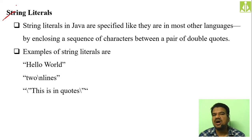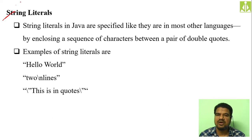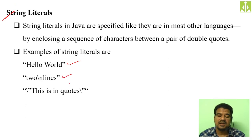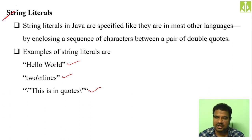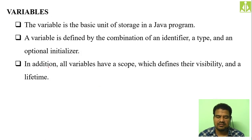In Java, string is an object. String literals are specified by enclosing a sequence of characters between a pair of double quotes — for example "Hello World". The representation is the same as C — double quotations — but in C a string is a sequence of characters terminated with a delimiter, whereas in Java a string is an object, which is something different.